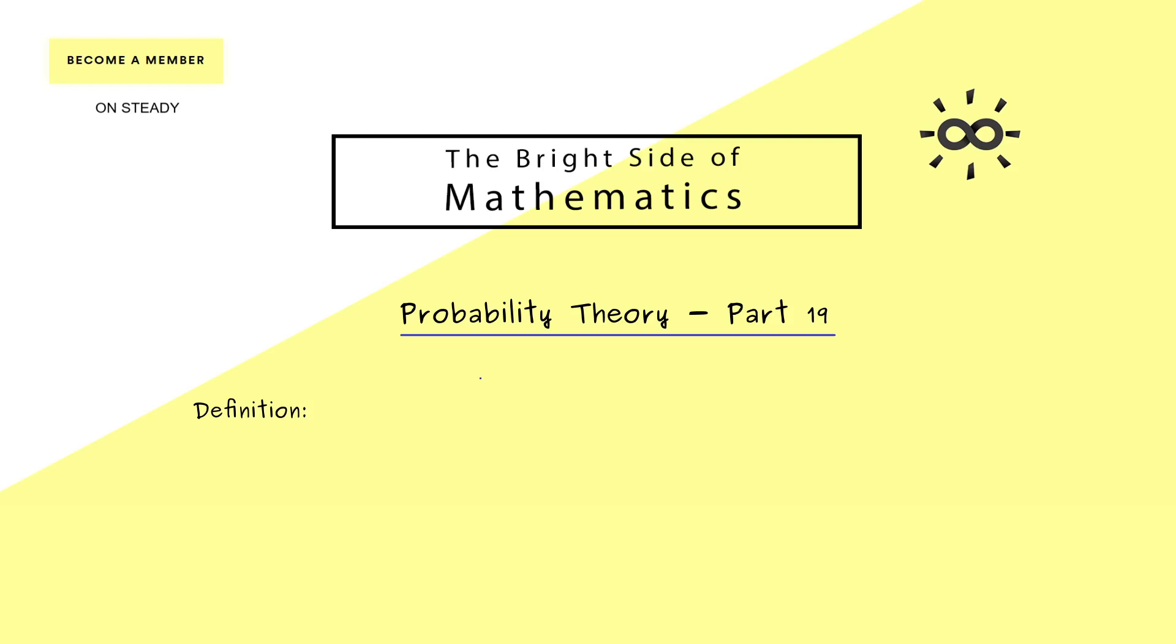Okay, with that I would say, let's start with the first definition here. And as often, the main ingredient we need is a probability space consisting of a sample space omega, a sigma algebra A and a probability measure P. And as already mentioned before, we need two random variables X and Y.